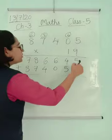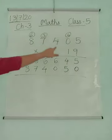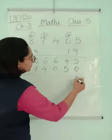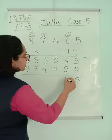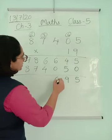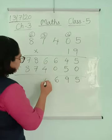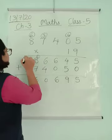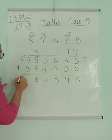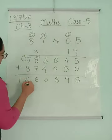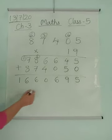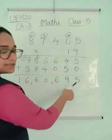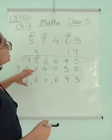So now addition of both these answers gives you the answer for the total. 5 plus 0 is 5, 4 plus 5 is 9, 6 plus 0 is 6, 6 plus 4 is 10, 8 plus 7 is 15 plus 1 is 16. So my answer is 16,60,695. So very easy.